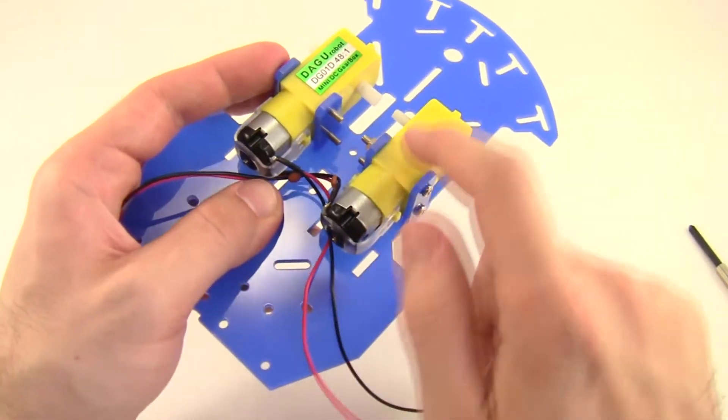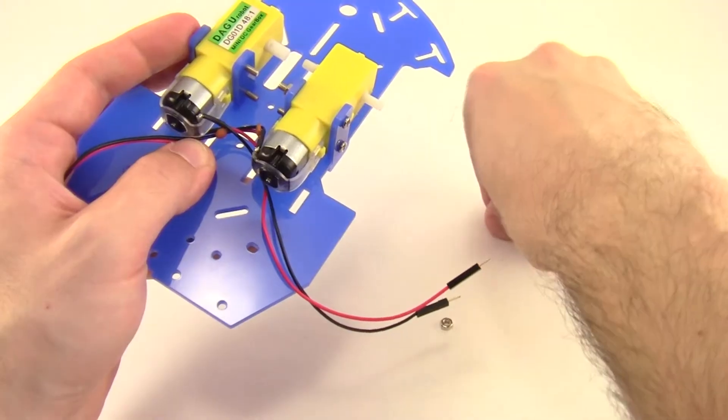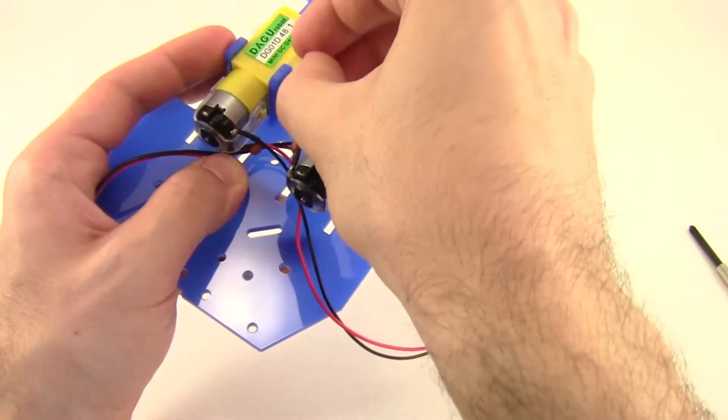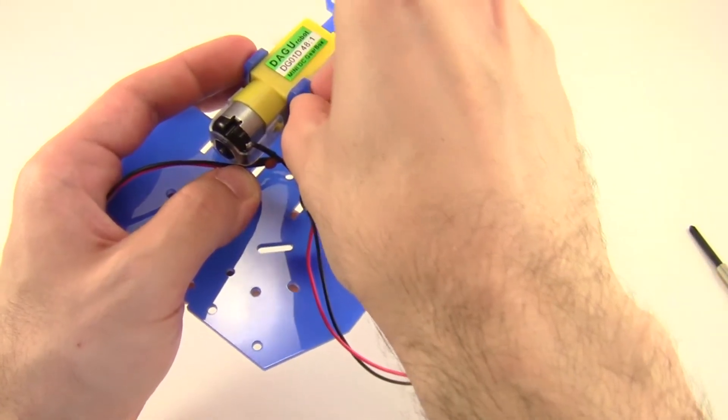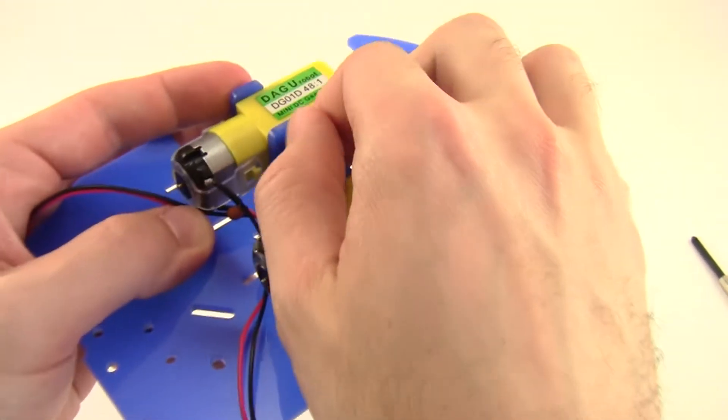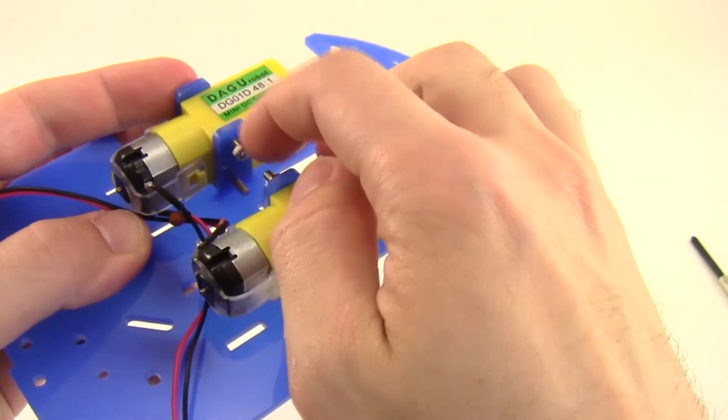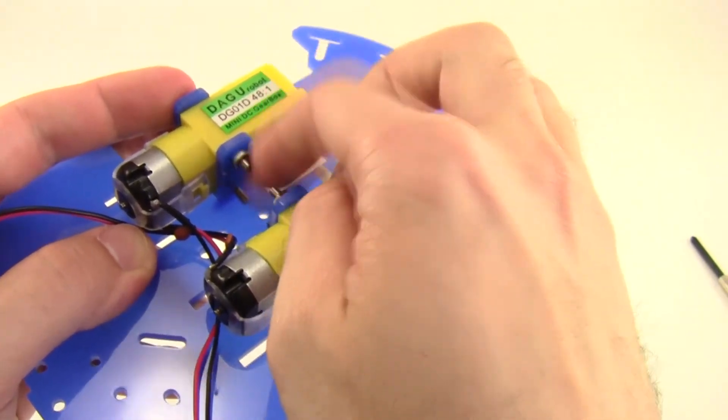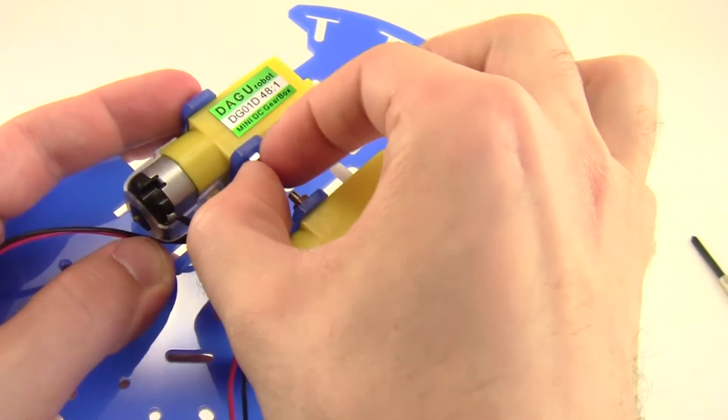Now, once you have the screws through those holes, you need to get the nuts on the inside. So this is a part where children with small fingers might actually have an easier time than adults because it can be a little hard to fit your fingers in there to get the nuts on. If you have a pair of tweezers or small needle nose pliers, that can really help with the lower nut if you can't reach your fingers in there.